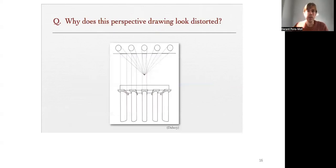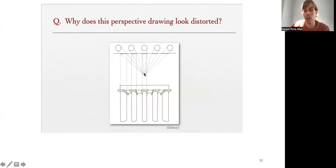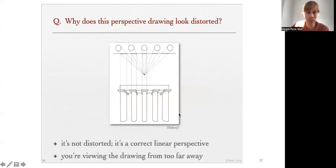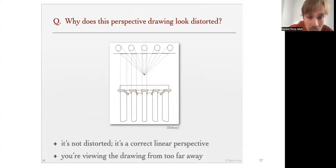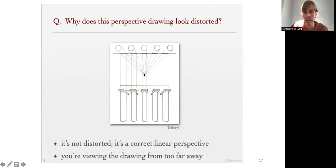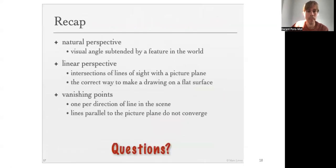Consider columns that look distorted in a drawing. Why does this drawing look distorted? The drawing is not distorted — it's just that you're viewing it from too far away. To see it correctly, you should be looking much closer to the drawing, to respect the distances at which it was captured in the first place. This is a physical property you cannot get rid of when taking pictures.